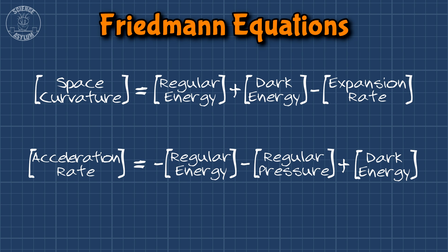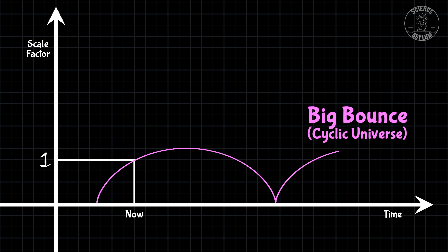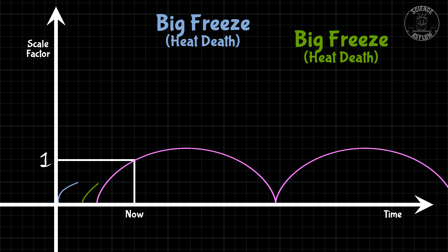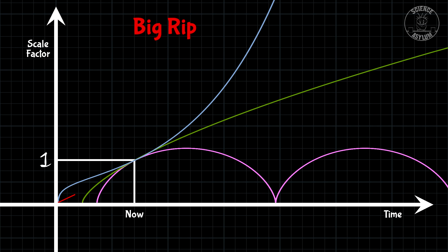These two equations describe all possible futures for the universe. Here are the options: There's the Big Crunch, where the universe eventually re-collapses. That's closely related to my personal favorite, the cyclic universe, where the universe expands and collapses over and over again in a big bounce. There's the Big Freeze, or heat death, where the expansion could slow down or speed up but it never stops, so the universe expands forever. Then there's the Big Rip, the most extreme possible future, where the universe accelerates so quickly that the scale factor becomes infinite in a finite amount of time — the universe rips itself into infinitely small pieces.